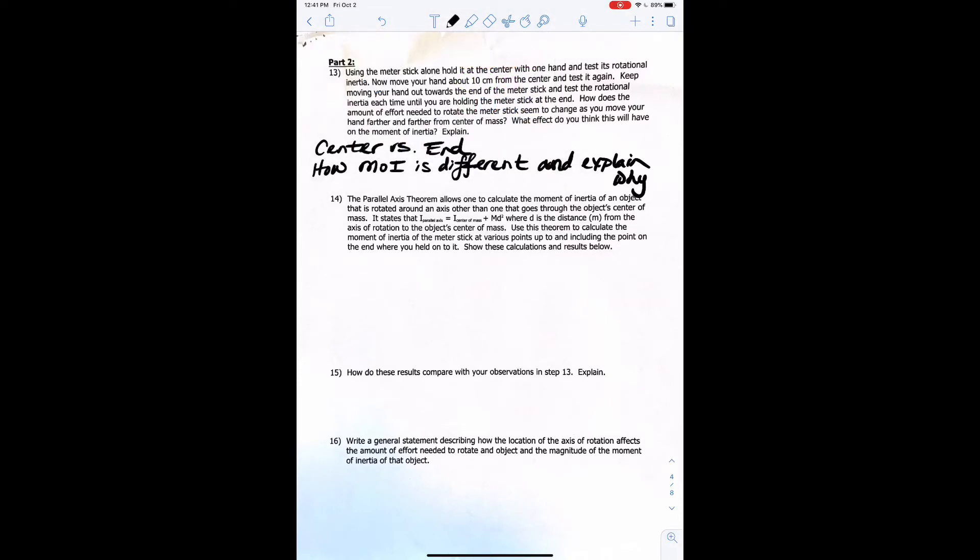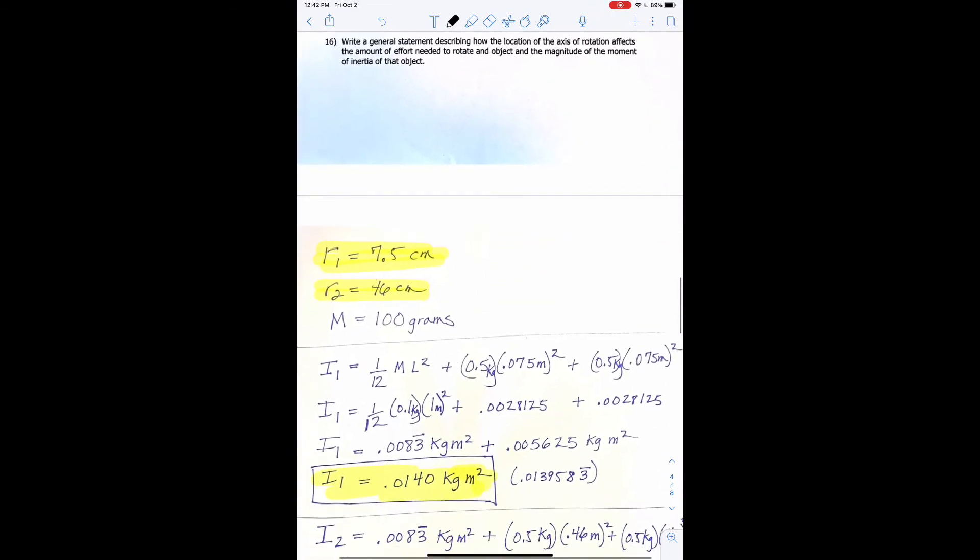So how do you think this will affect the moment of inertia? So think of it this way. Let me rephrase the question. So what you're commenting on here is if you spin the pencil about its center versus spinning the pencil about its end. So you can think of it that way. So center versus end, I'll just write some notes here. And talking about how the moment of inertia is different. And you can talk about how the angular acceleration is different. So explain why. How MOI is different. And explain.